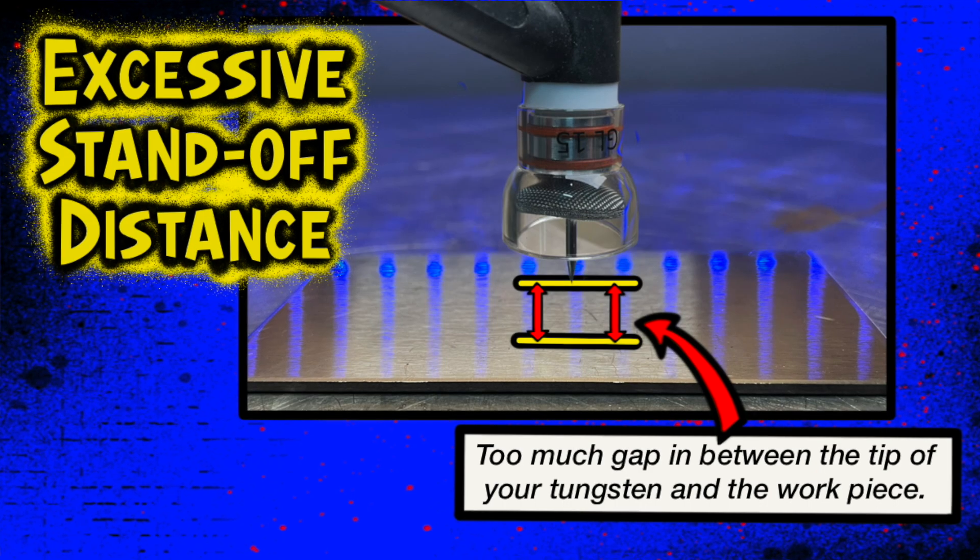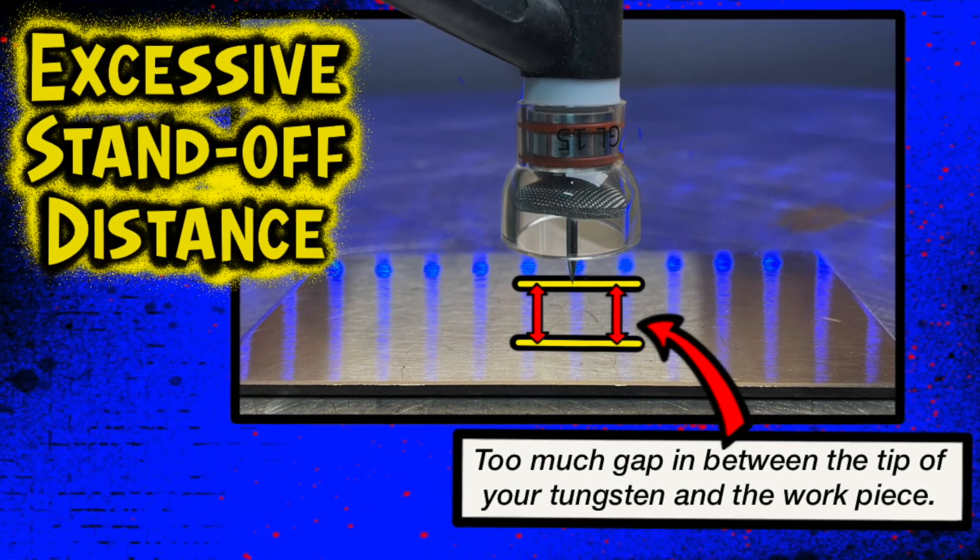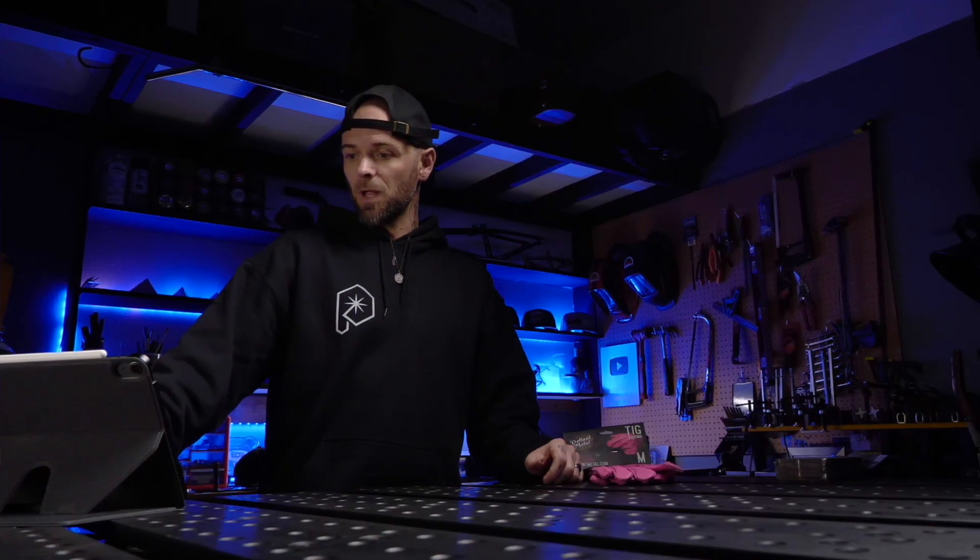The most common thing that I see usually cause this problem is excessive standoff distance or arc length or arc distance. There's a couple of names for it. People get mad at me in the comments for that one. So when you're welding and you increase this distance between the tip of the tungsten and the work piece, you're going to create an arc which is not focused properly on the welding area.